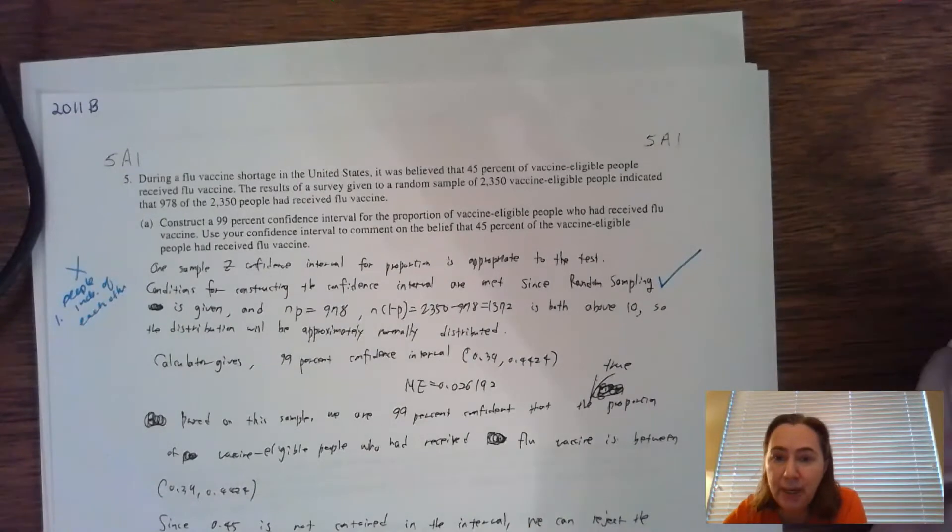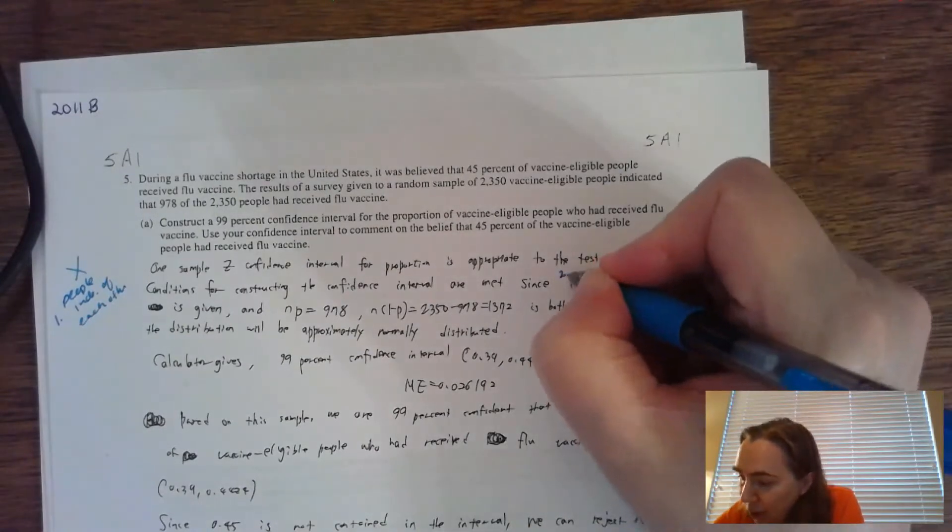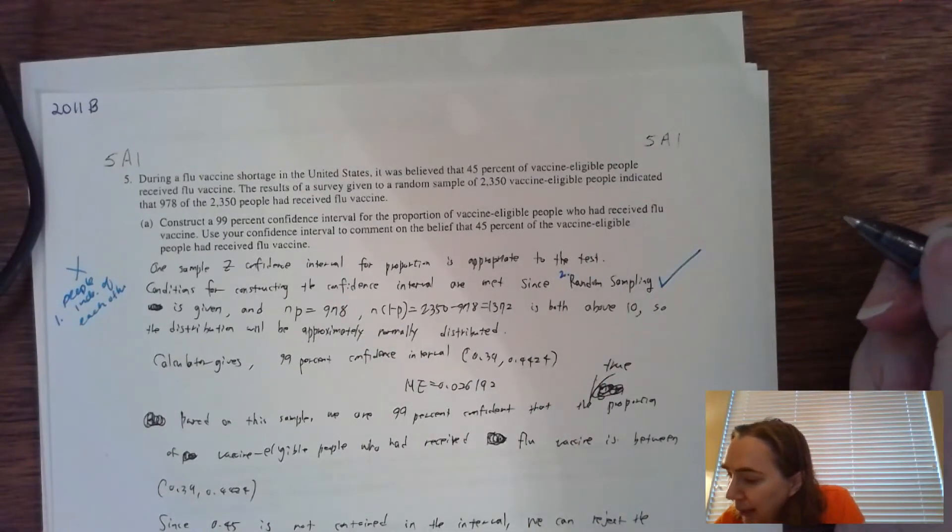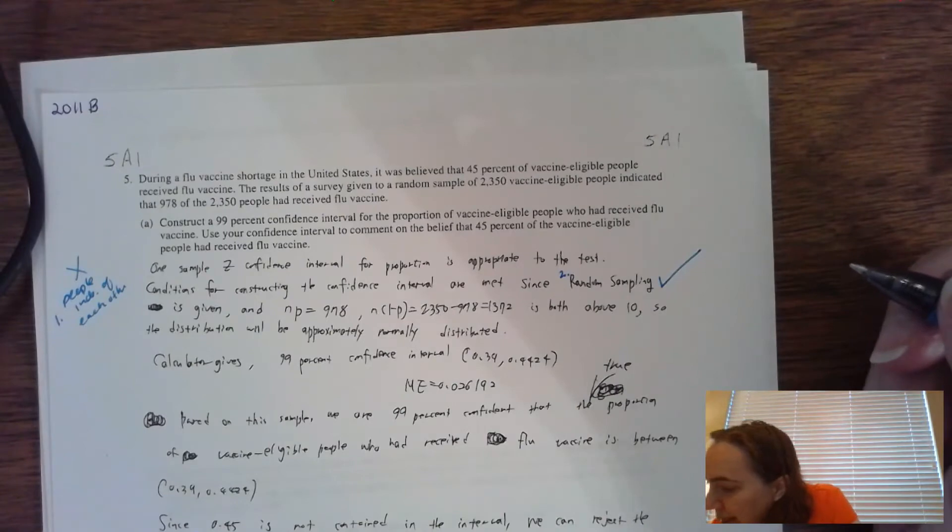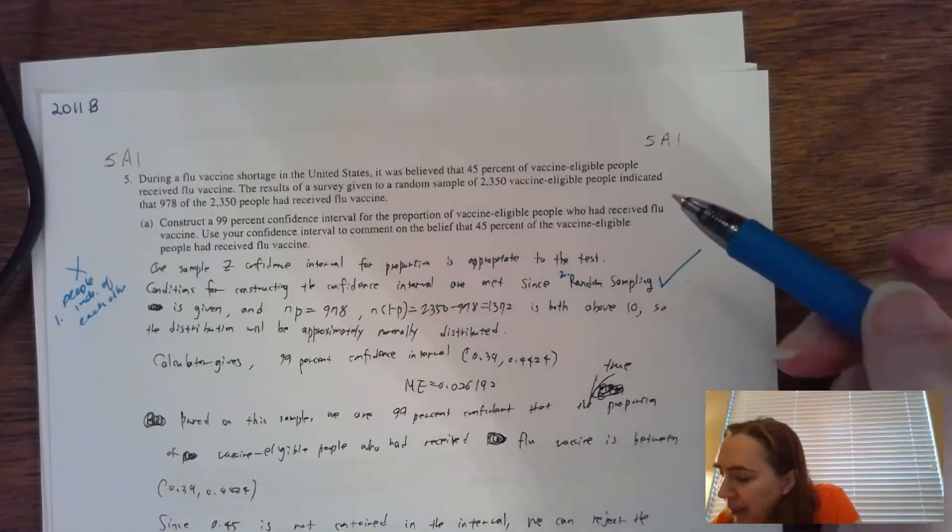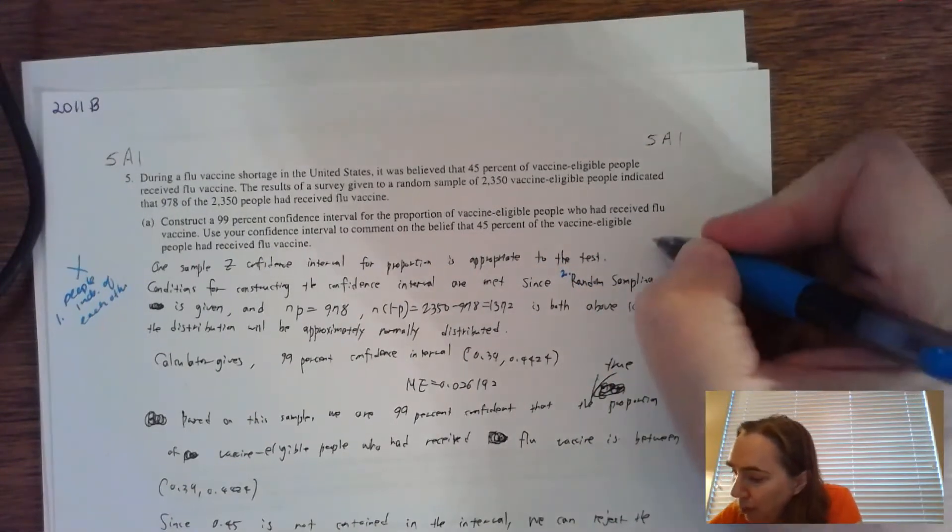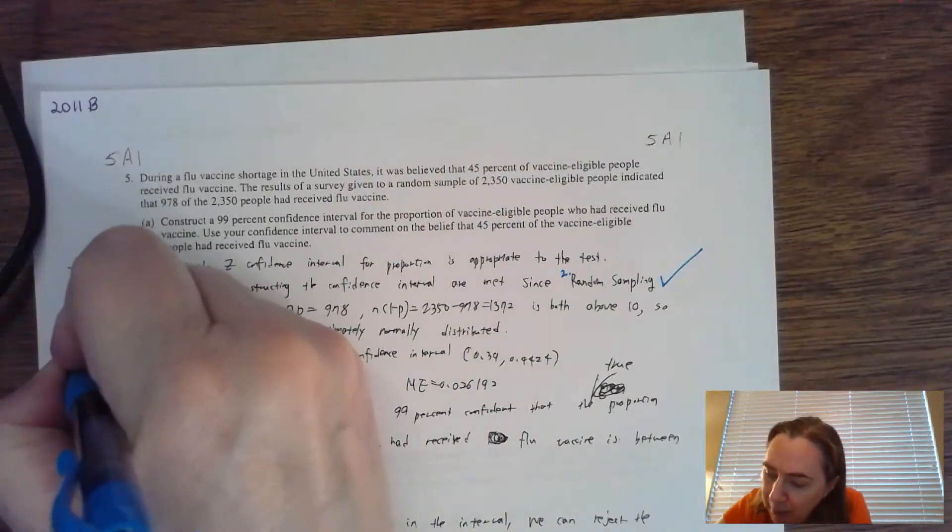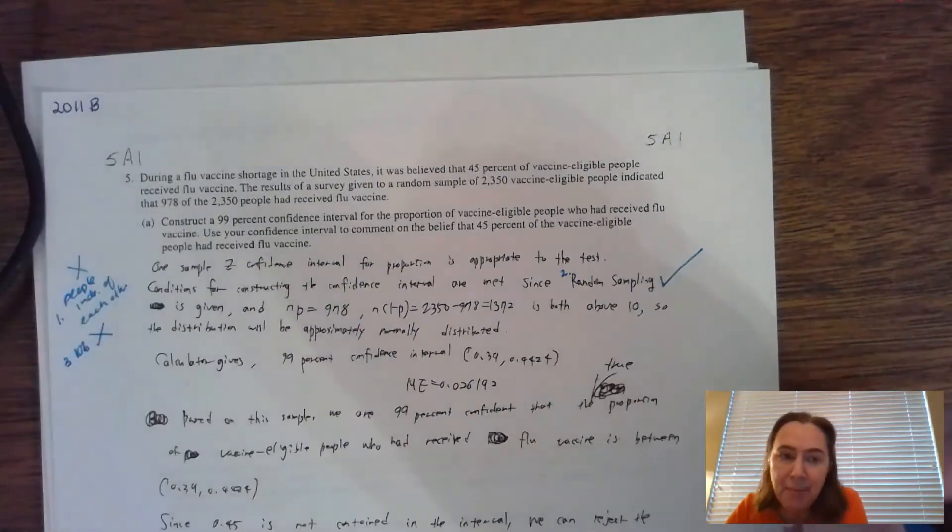It does say that random sampling was given. The problem states that a random sample was taken—that's number two. Number three, I'm looking for the ten percent condition. The sample size here is 2,350, which certainly is less than ten percent.